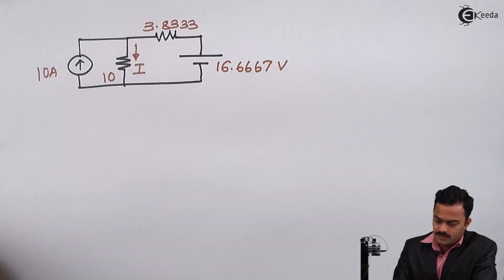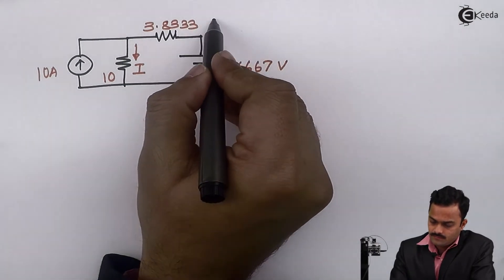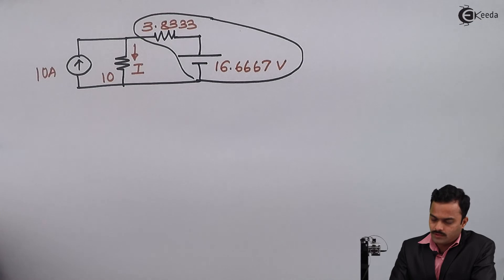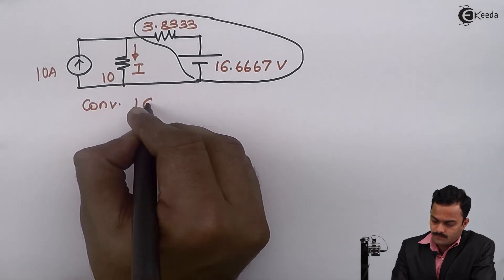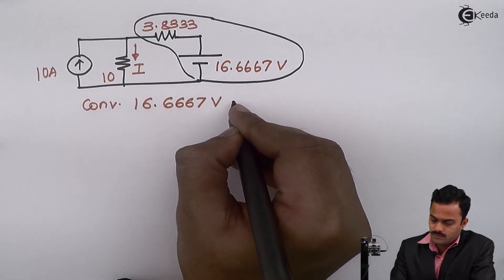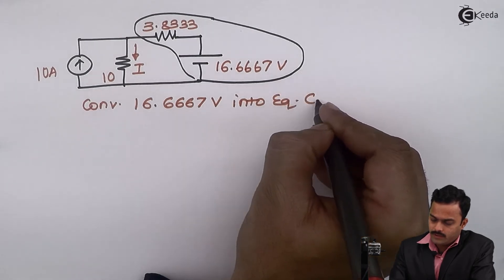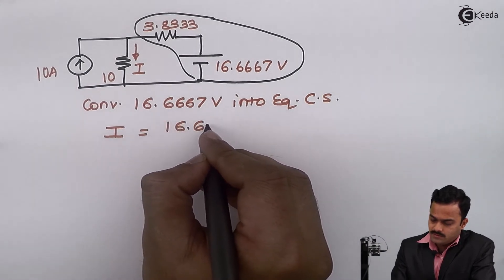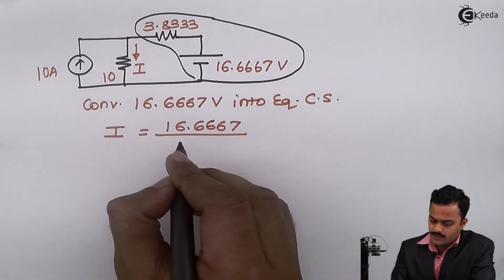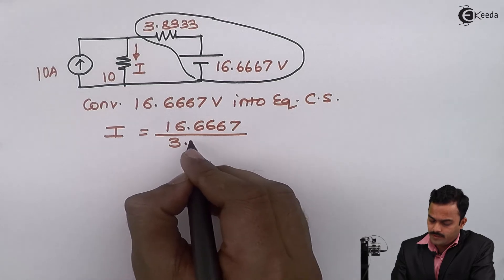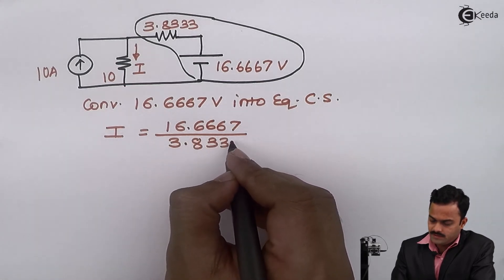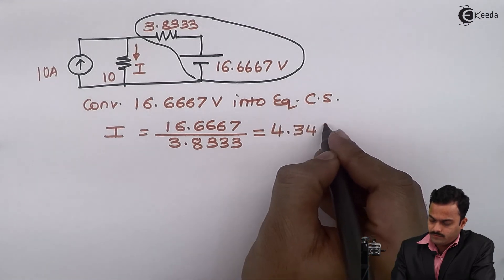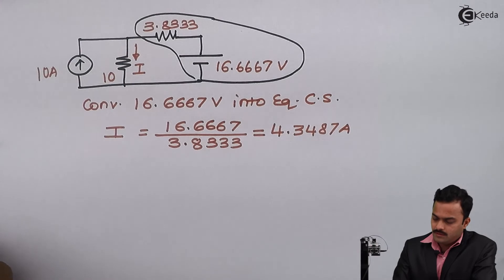In the redrawn circuit: 10 ampere, 10 ohm, 3.8333 ohm, and 16.6667 volt. We need to find current I. Converting 16.6667 volt into an equivalent current source: the current value will be 16.6667 divided by 3.8333, which gives 4.3487 ampere. Let us redraw the circuit.